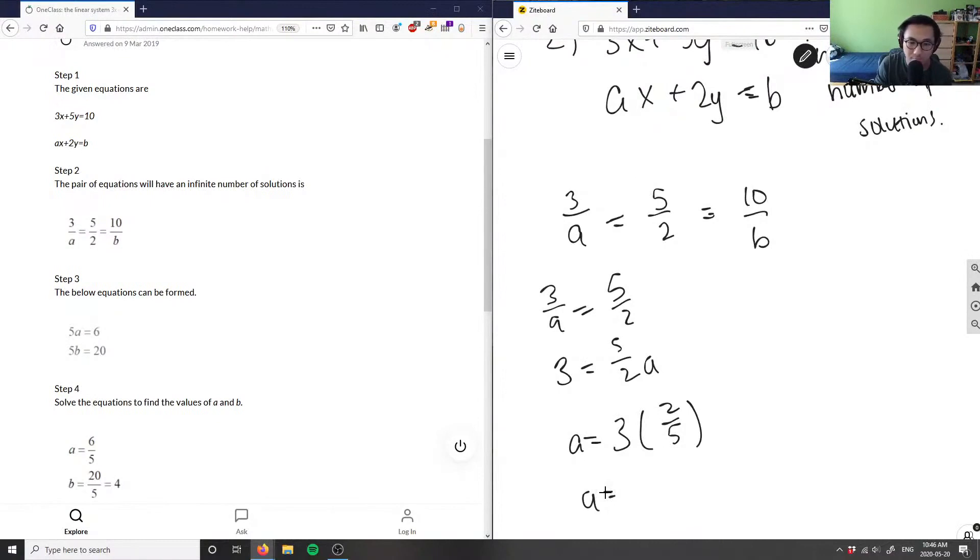So a equals 3 times 2, which is 6, over 5. Therefore a equals 6 over 5.